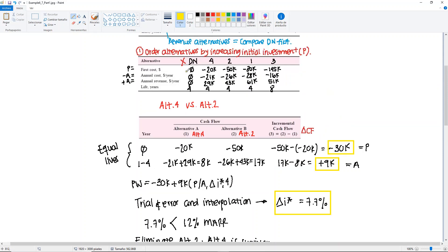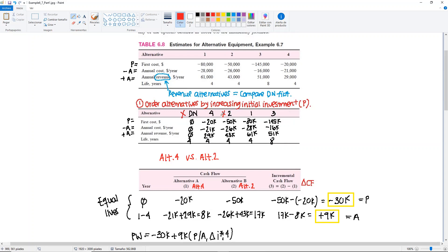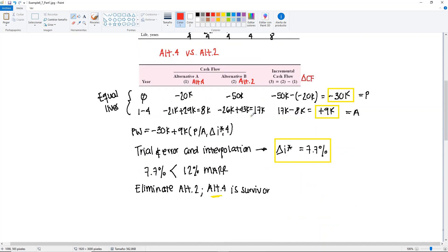We have eliminated another alternative, so now we keep alternative 4 and get rid of alternative 2. This means that in our next match or iteration, alternative 4 will now be going against alternative 1. Let me just put right here that we must compare the survivor with next alternative, which in this case would be alternative 4 against alternative 1, and let's do that real quick because it's a very similar process. Let me just copy the incremental cash flow table.